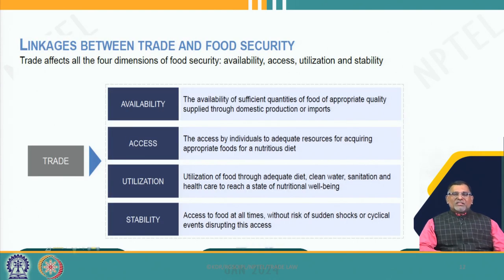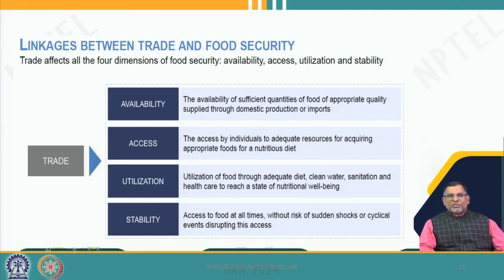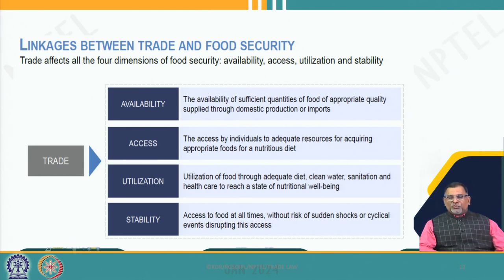There is a clear linkage between production and other factors — especially trade — and how trade is directly connected with food security through availability at the domestic level, then access, utilization, and stability. For trade and exports, there must be sufficient available food of appropriate quality and standard present in a particular country.